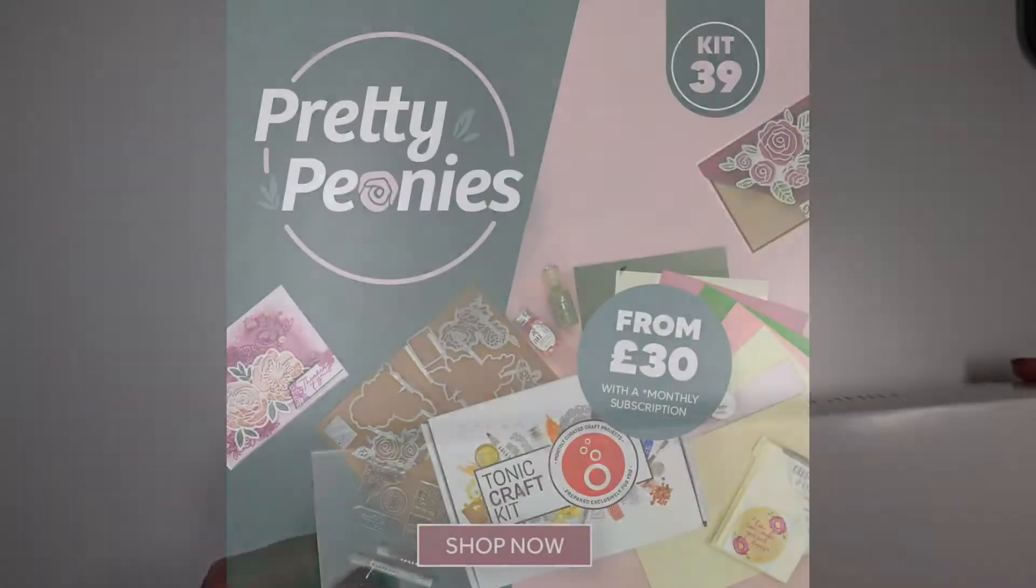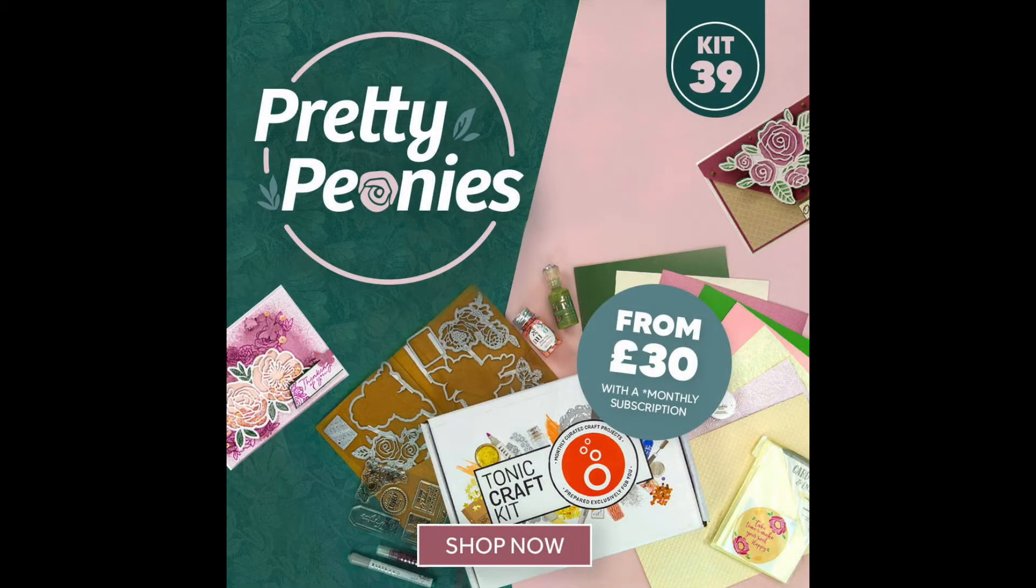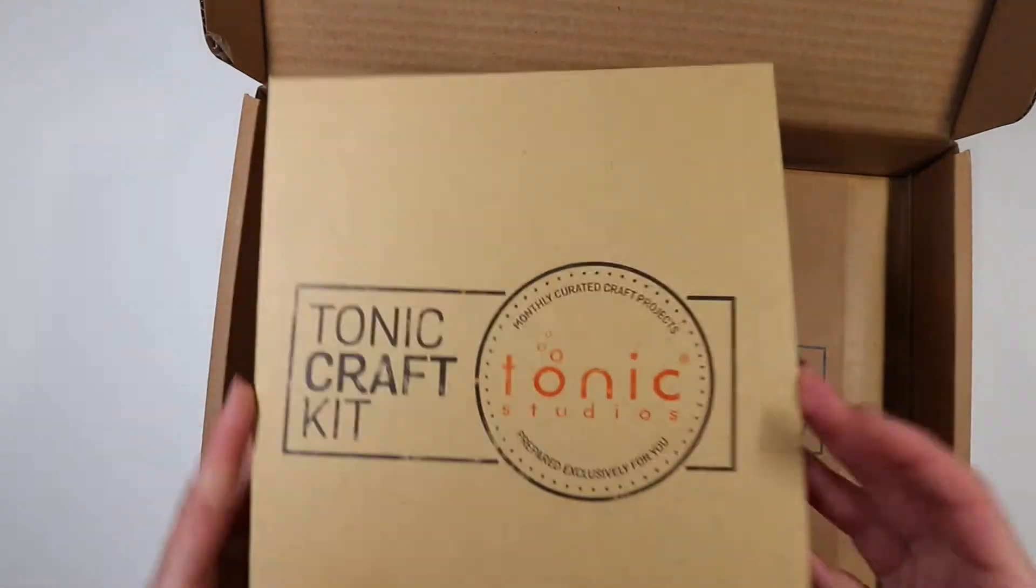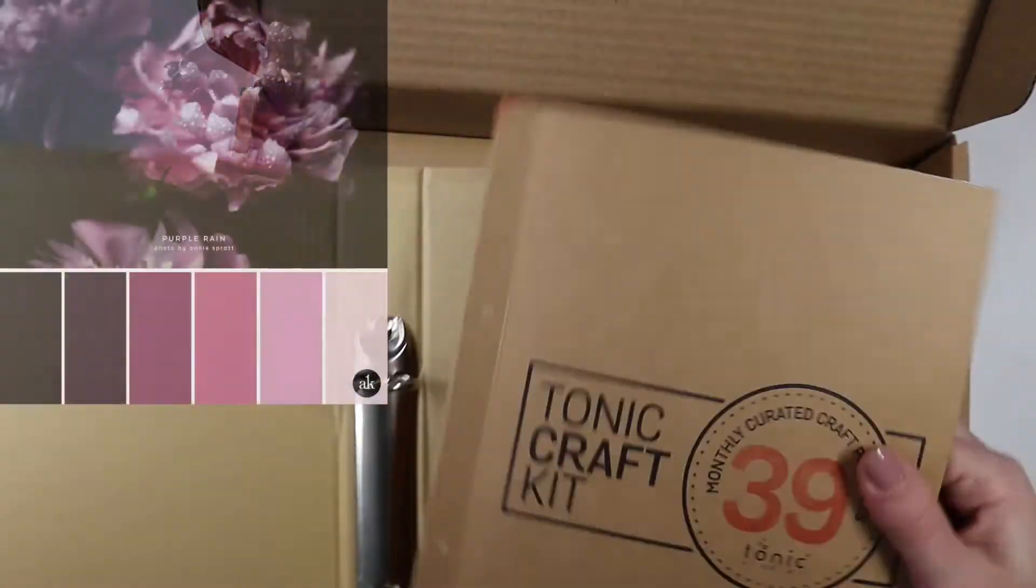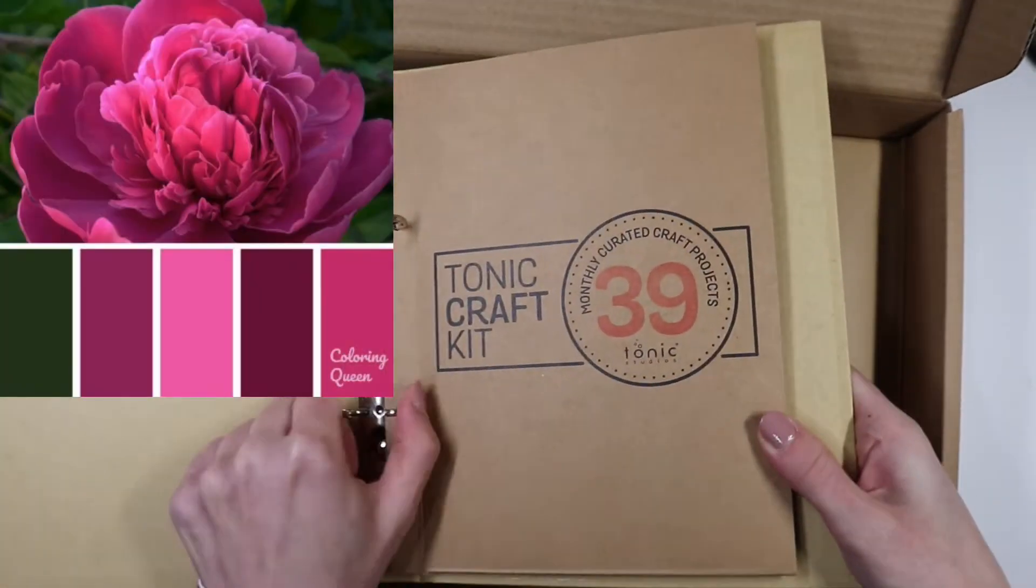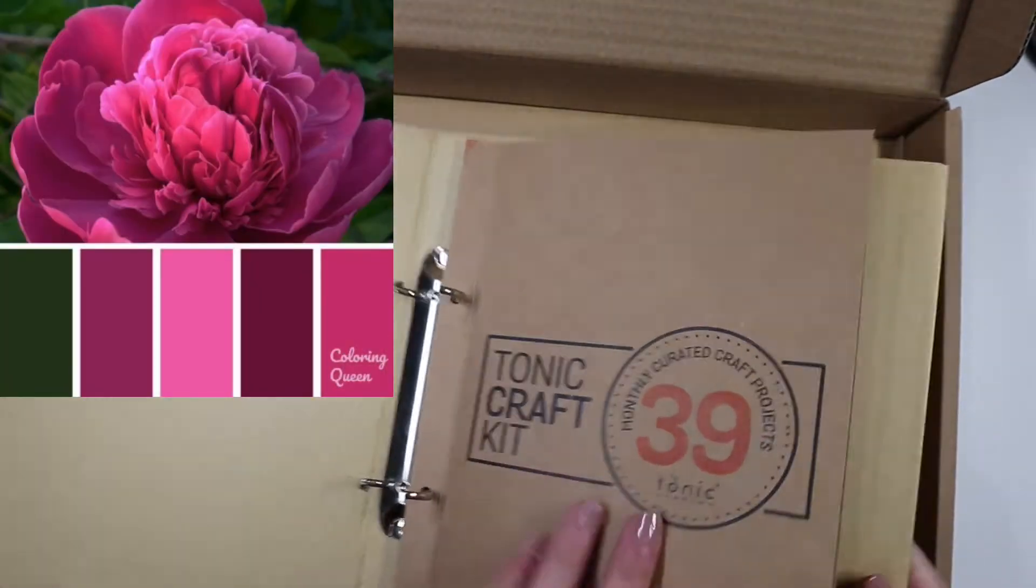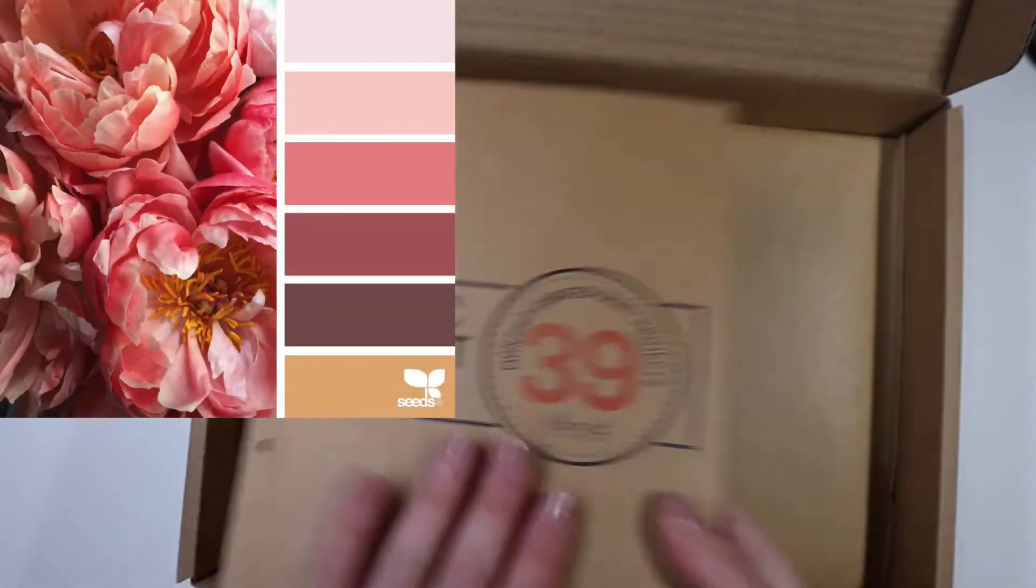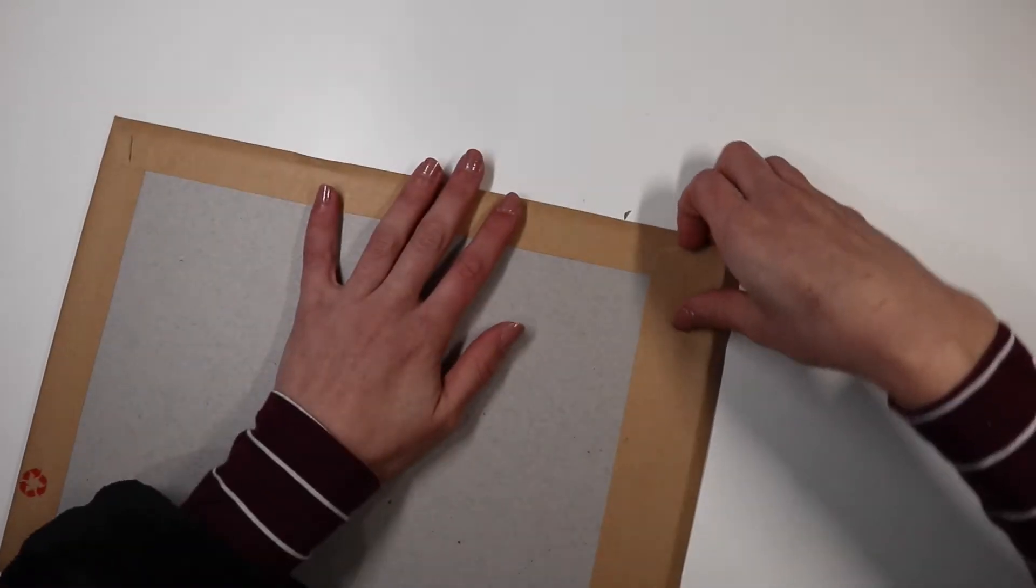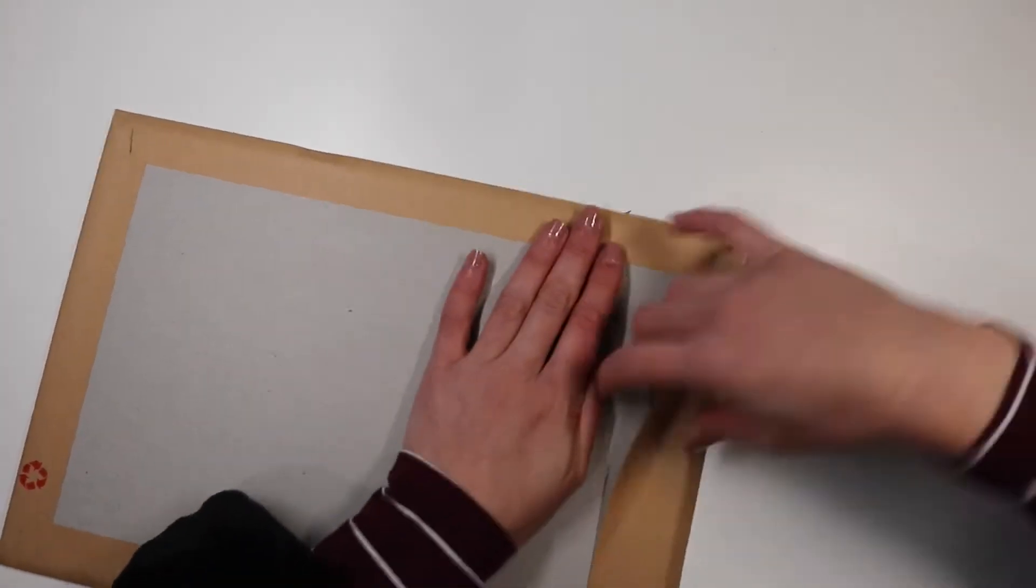The theme of kit 39 is Pretty Peonies. The set of stamps and dies will allow us to create a decorative element featuring delicate peonies. The color palette shows the classic colors used for peonies: pinks, greens, but as we will see we find some ivory that gives a touch of elegance to this palette.